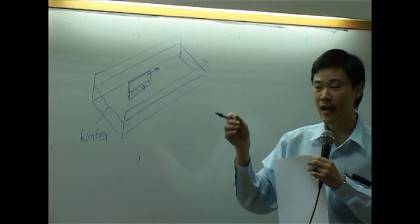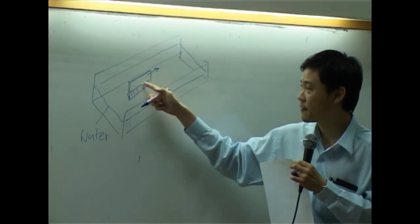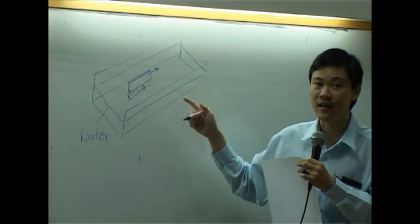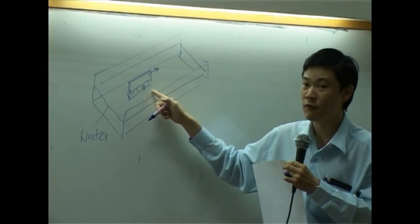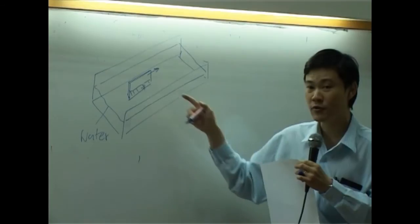Now, if I pull this piece of metal or wood at constant velocity, that means there is no force. Do you think the water here would flow along with the piece of wood here?